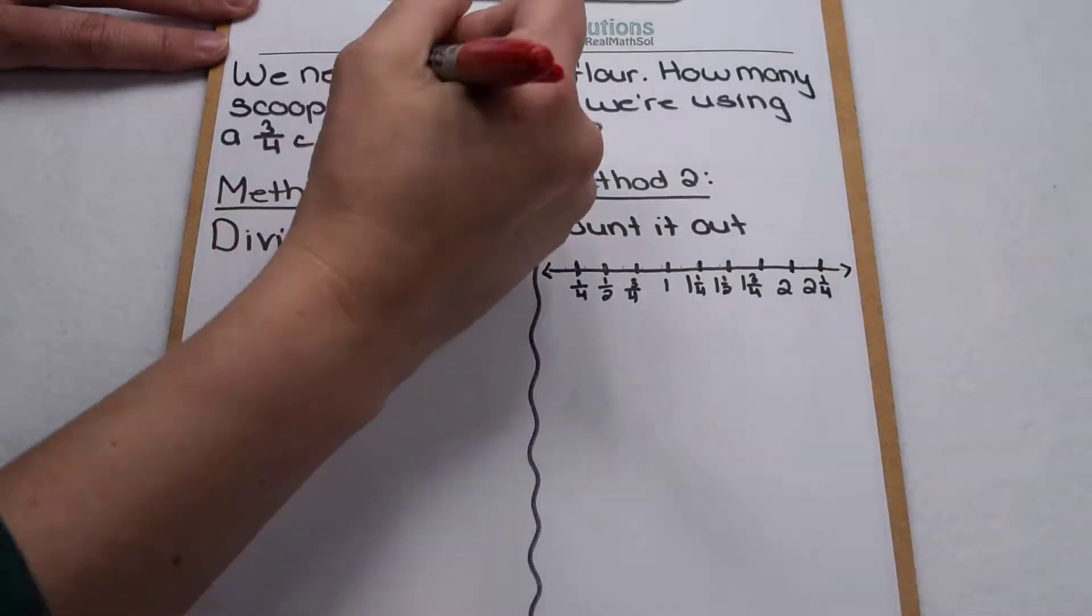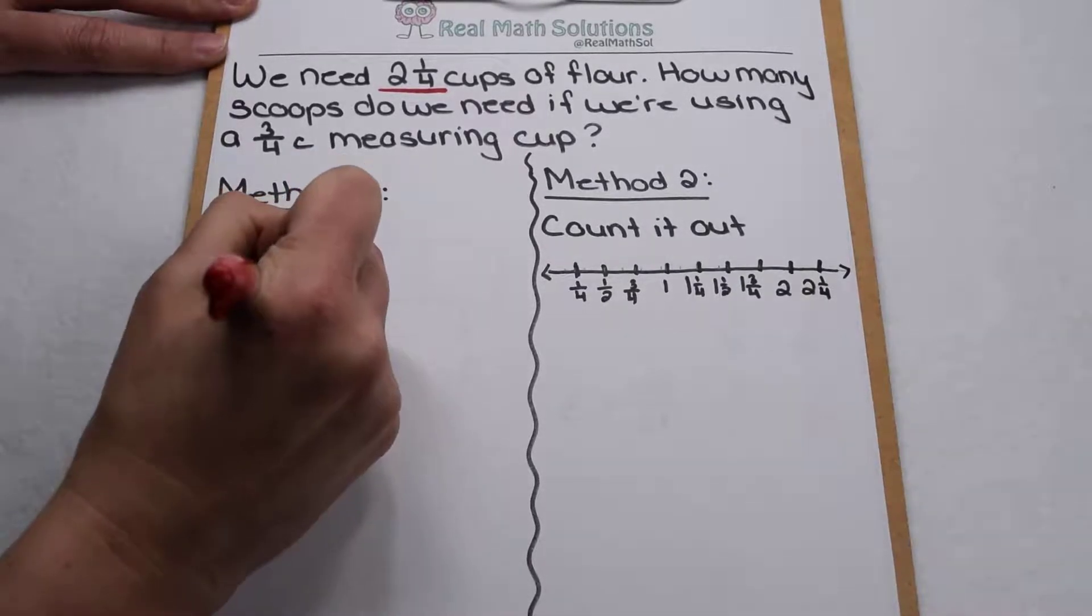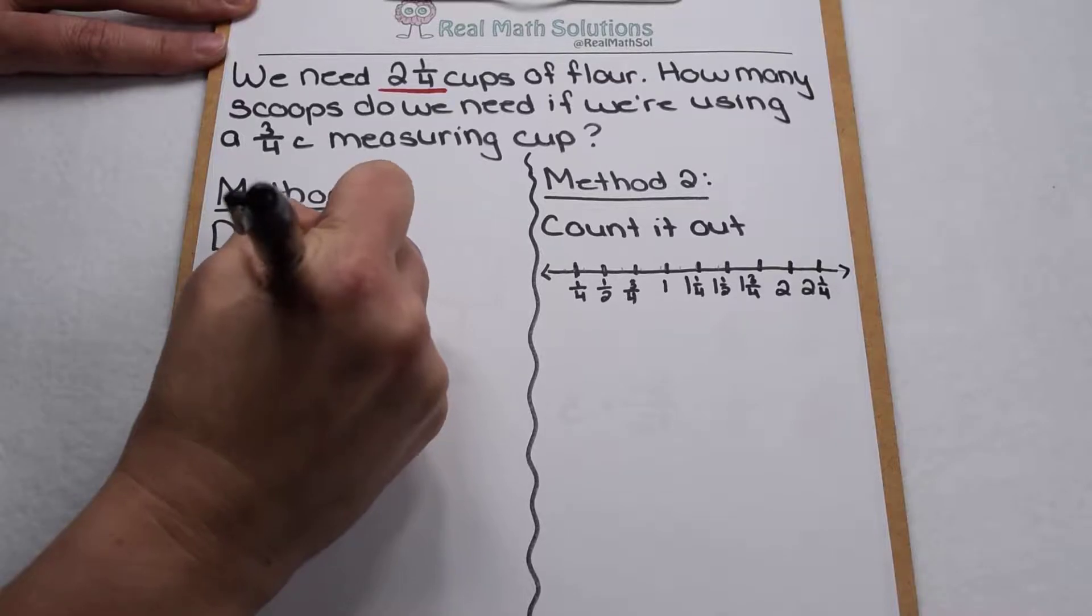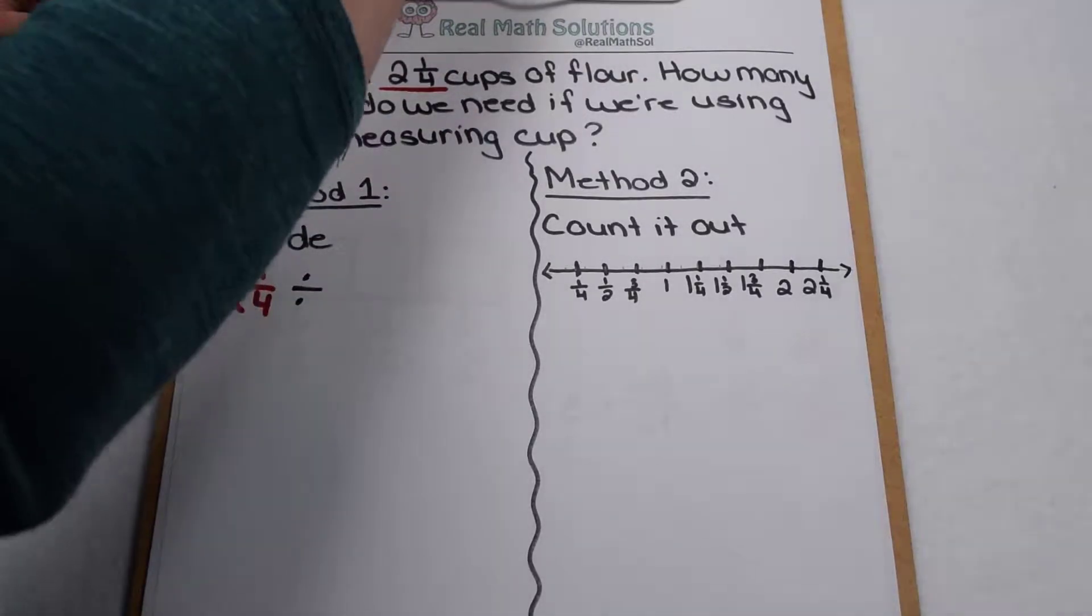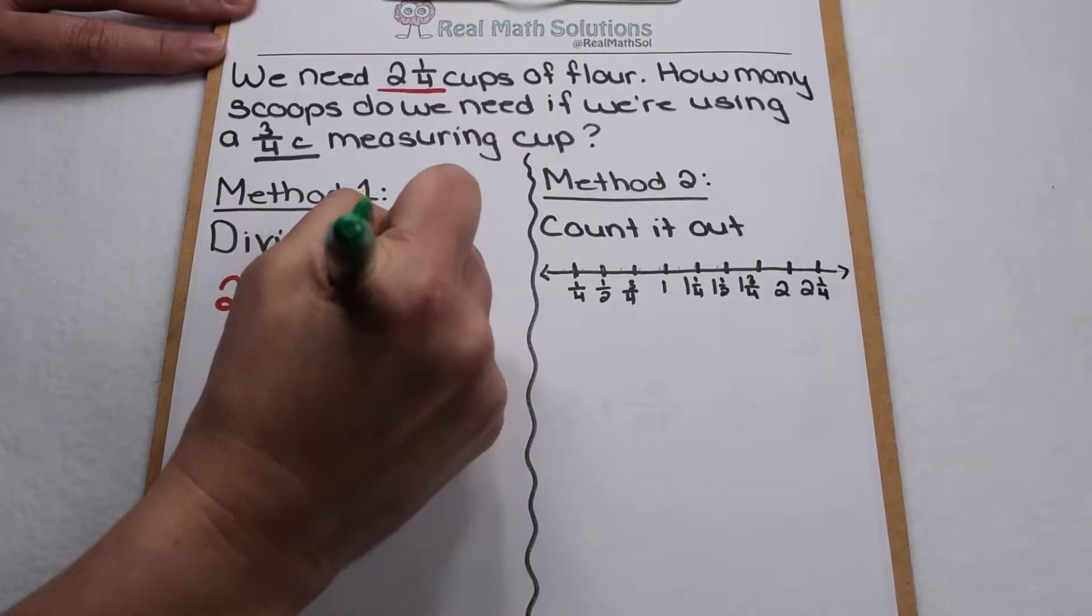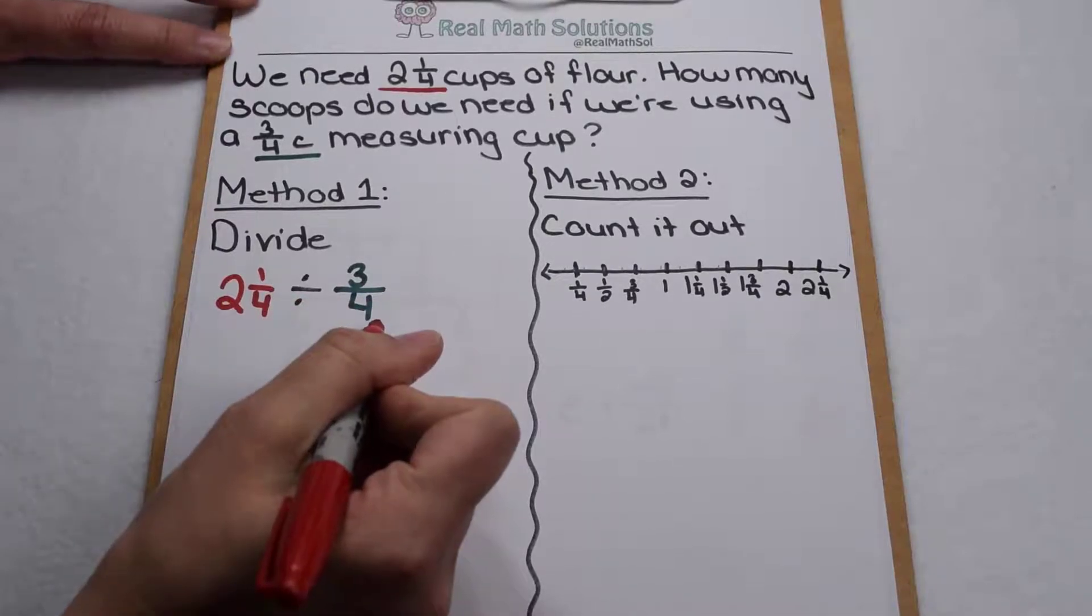When we divide, our dividend tells us how much we're going to need. Well I'm going to need two and a quarter cups. And our divisor tells us how we're going to split it into groups. I'm going to split it into groups worth three fourths of a cup each. So if we're going to divide it out, I'm going to need to solve two and one fourth divided by three fourths.